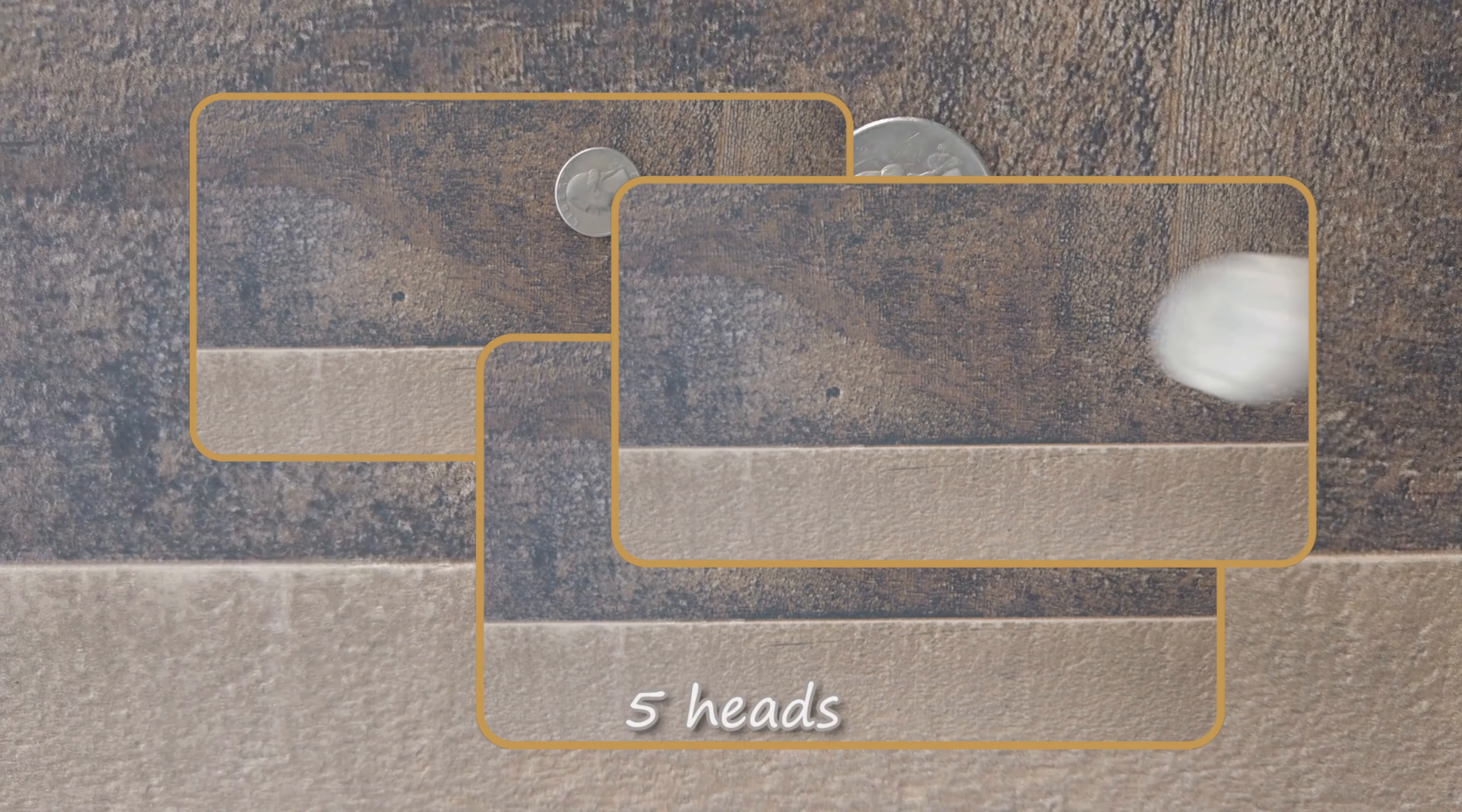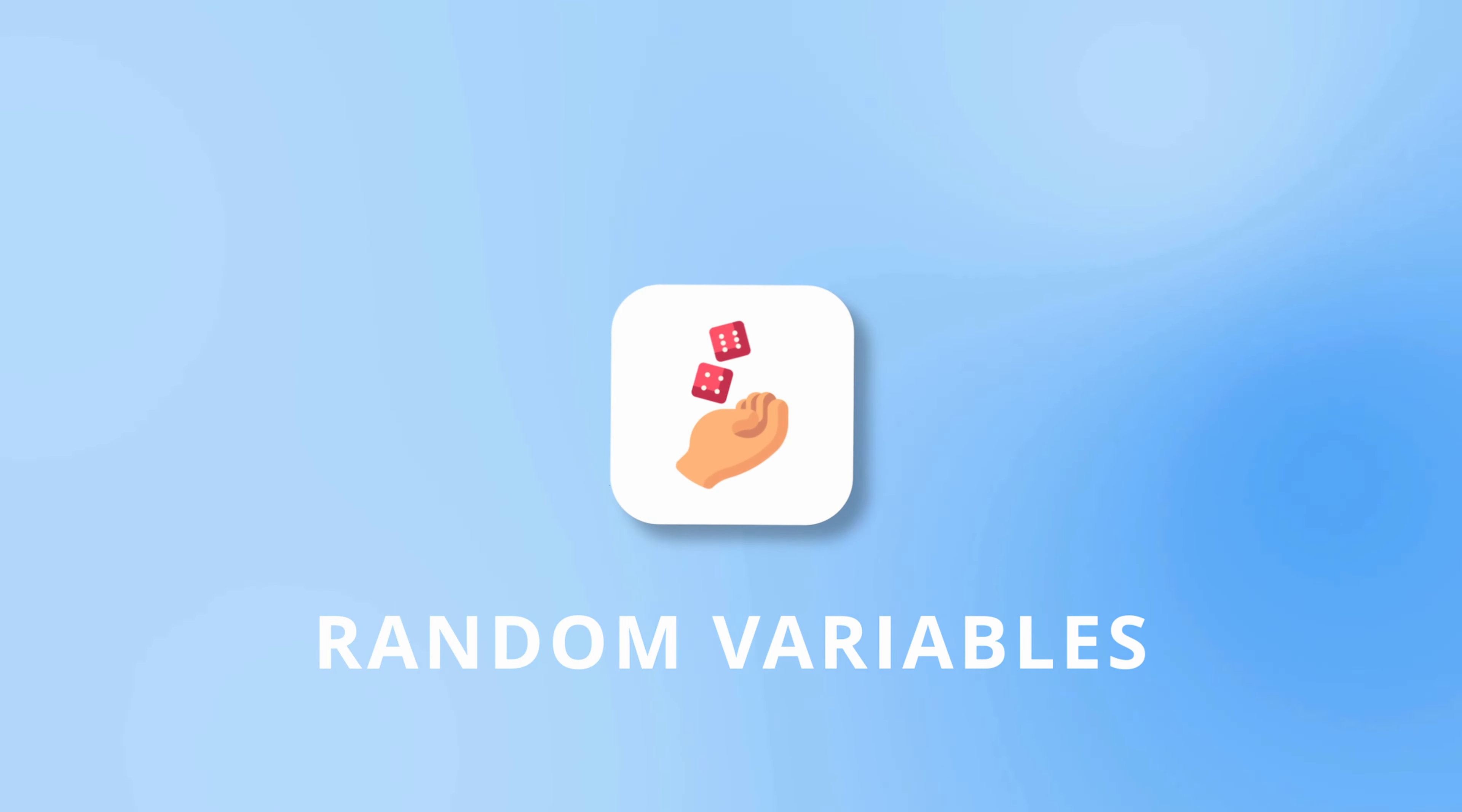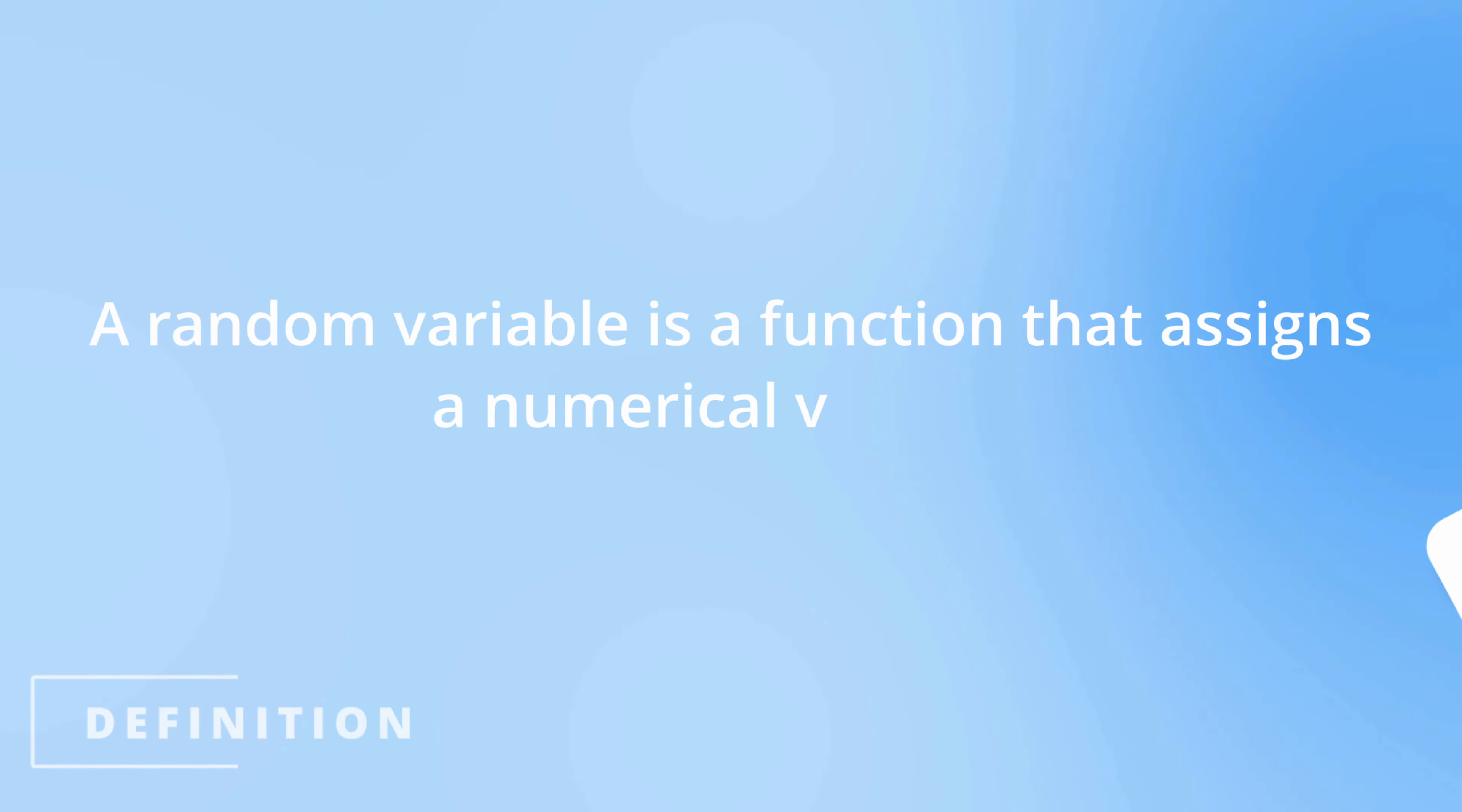But what if we wanted to calculate something a little more complicated, like the probability that in 20 coin flips there are 5 heads, or instead of a fair coin, the coin has a 60% chance of landing on heads. This is why we introduce random variables because they give us a systematic way to write out the outcomes of a random experiment.